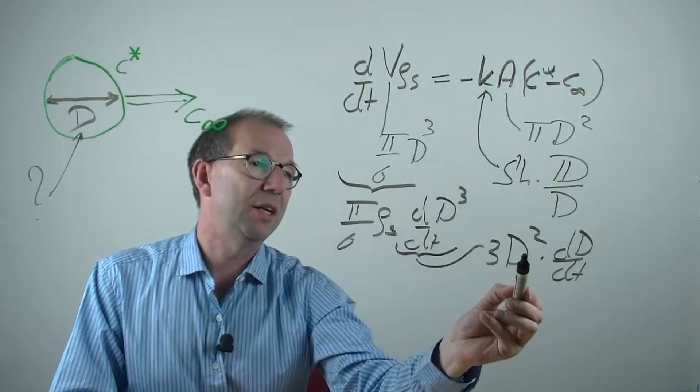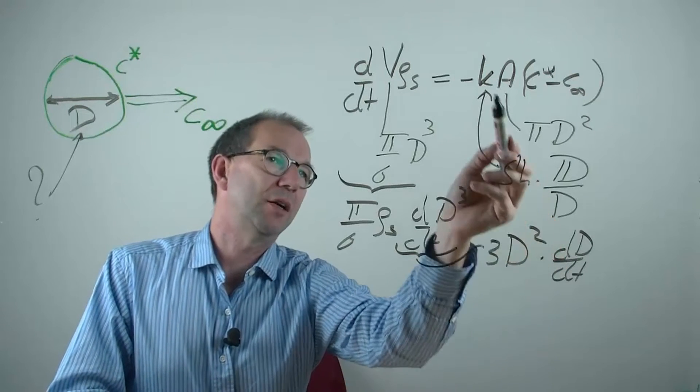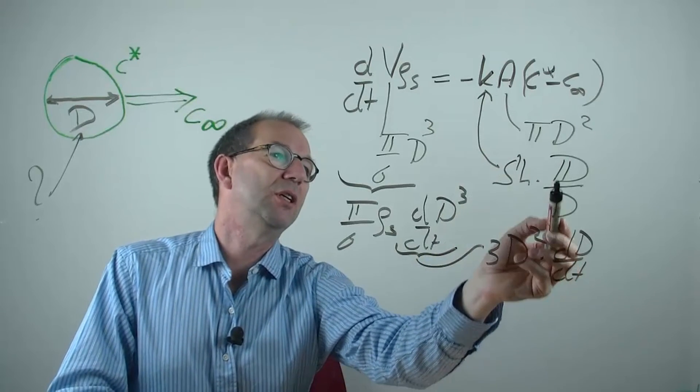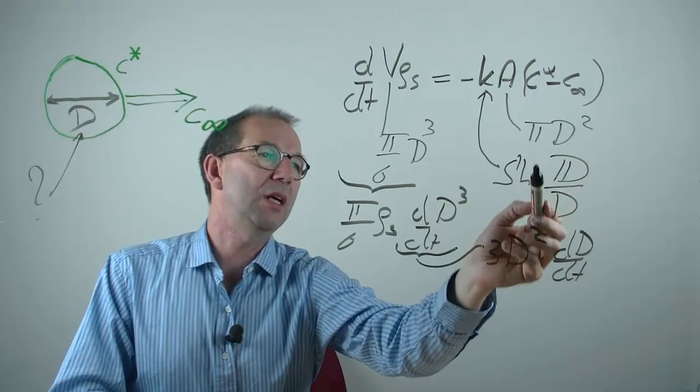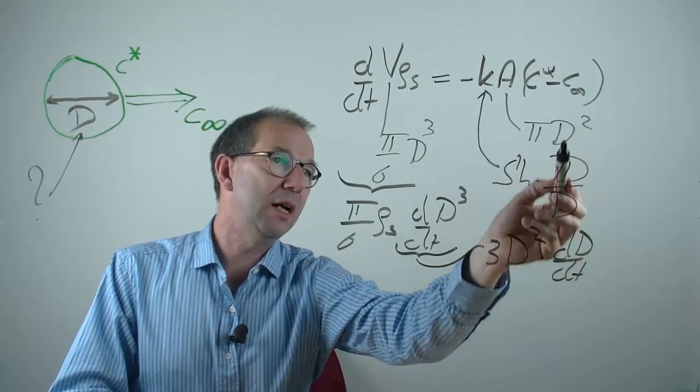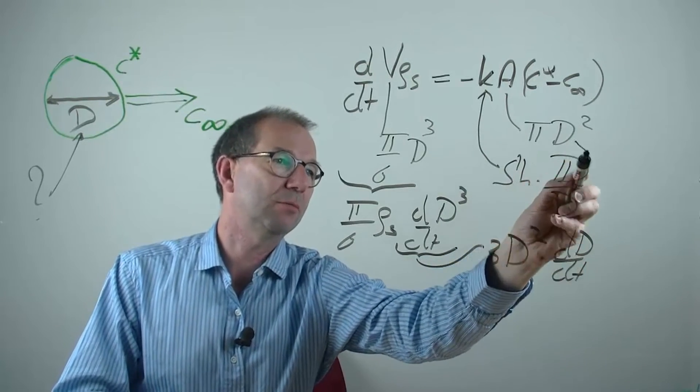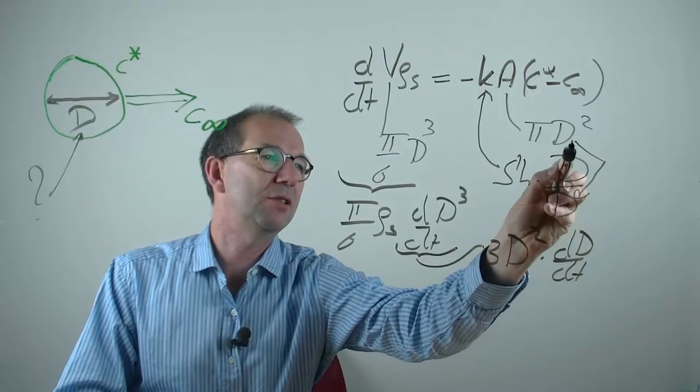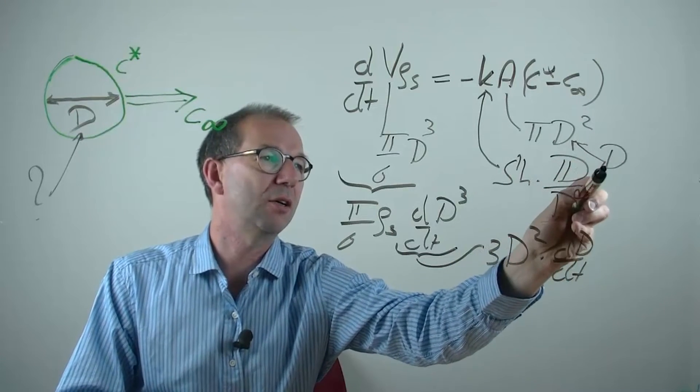We got D squared here, but on the left side, there is a 1 over D and a D squared. So from these, there is only a linear D left. Quickly denoted, these two give on the right hand side 1 D.